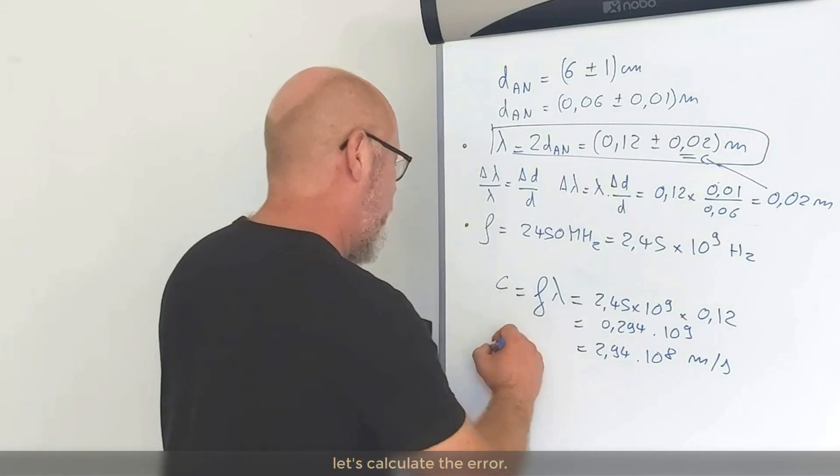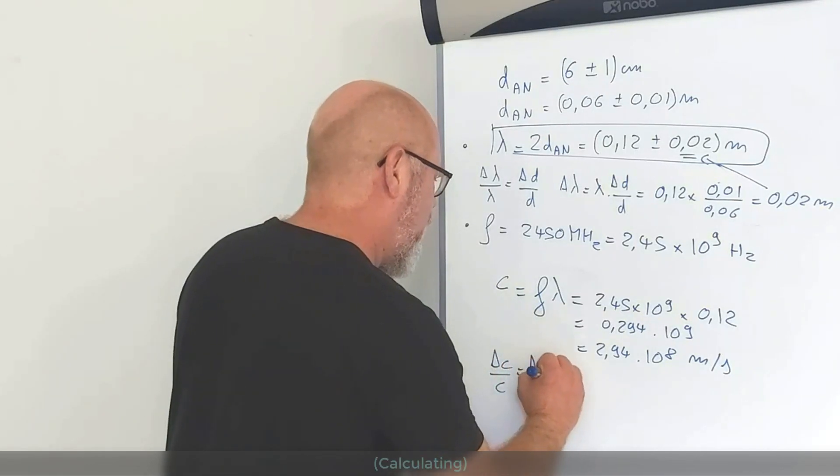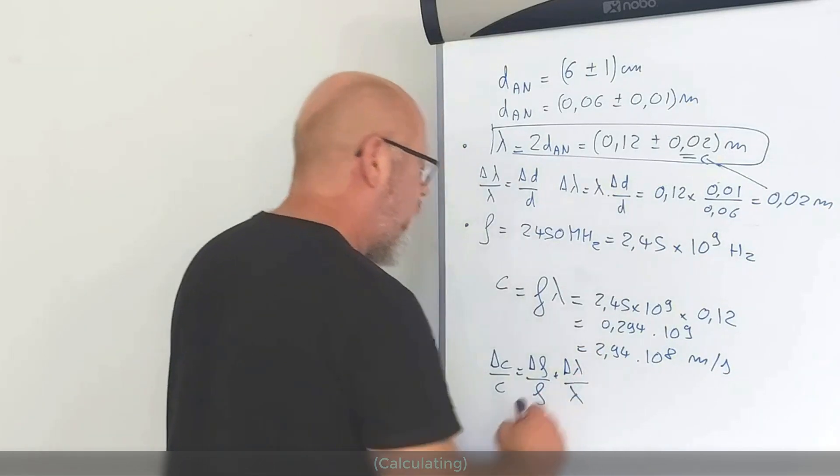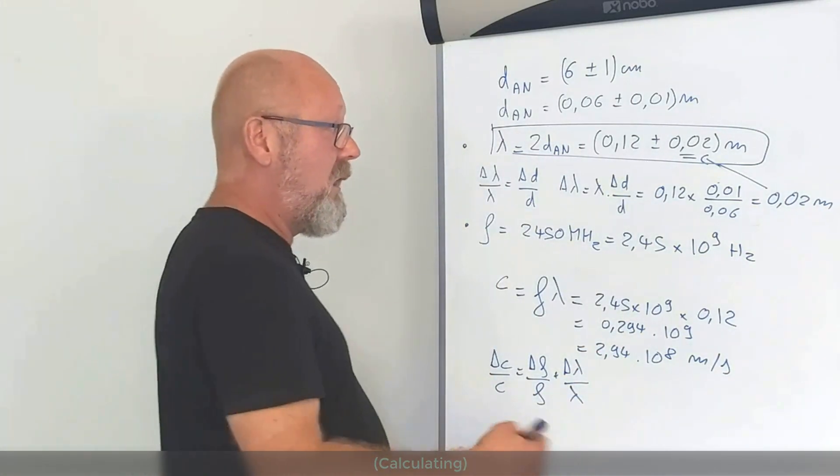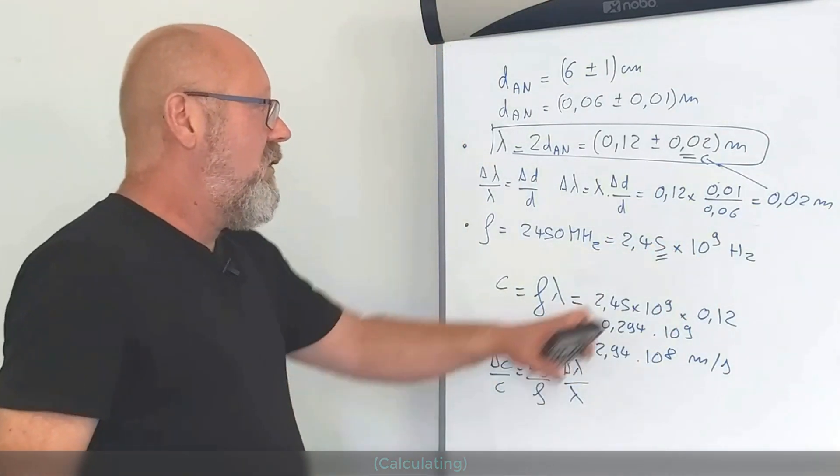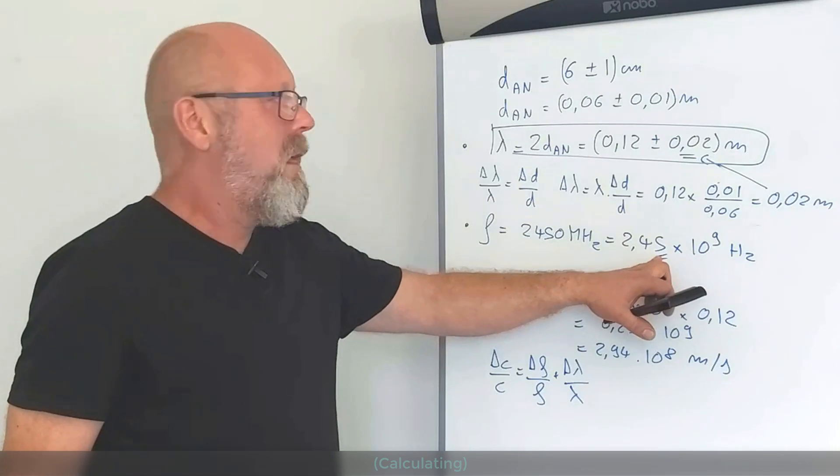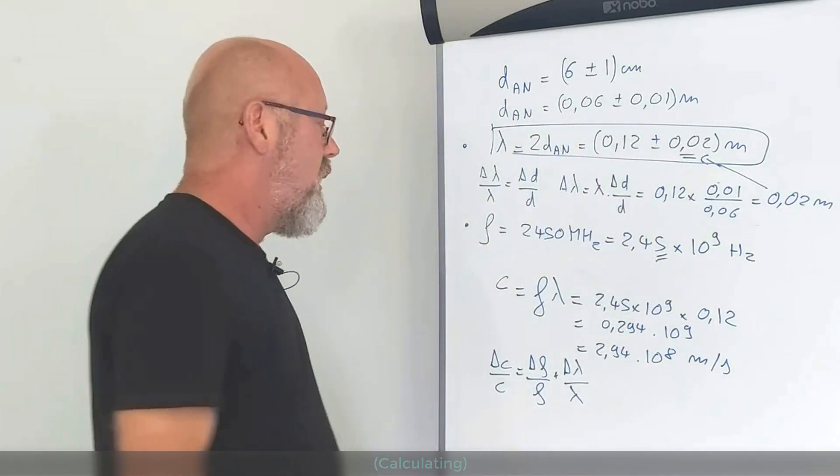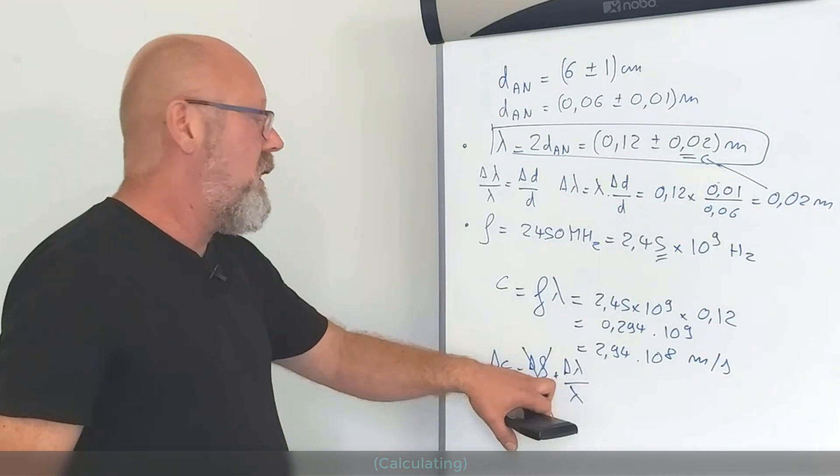Let's calculate the error. So, delta c over c will be equal to delta f over f plus delta lambda over lambda. Now, there's no error on the frequency, which is given. So, when it's not given, you take the last digit. But you see, it's going to be something like less than a half a percent compared to something like 15% for the wavelength. So, I can neglect it. This one will be much larger than this one.